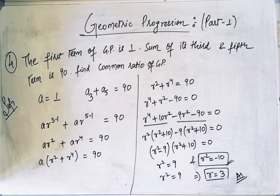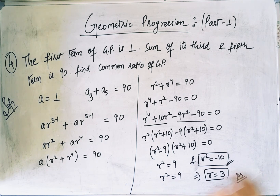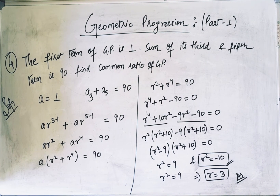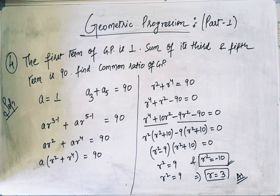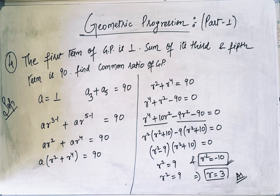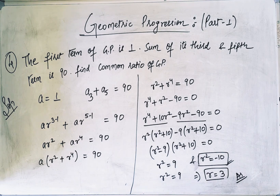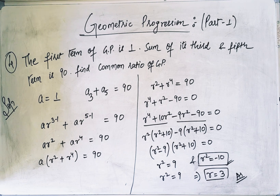So this is how we can calculate whatever is asked relating to the nth term of GP. Using the formula a × r^(n−1), you can solve your exercise on the nth term of GP very easily. Hope you are finding these videos helpful. Please do like, share and subscribe the channel. Thank you.